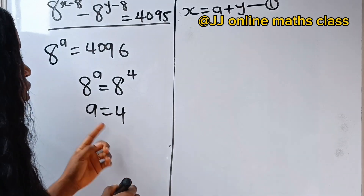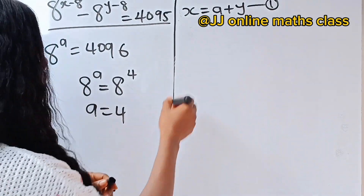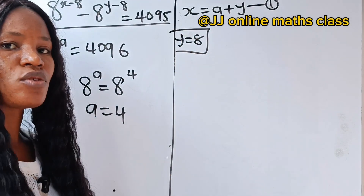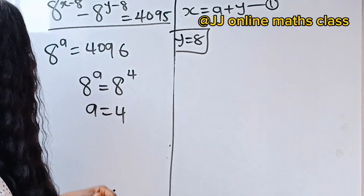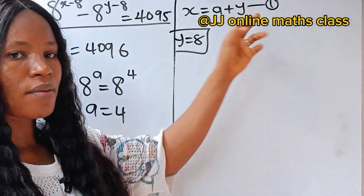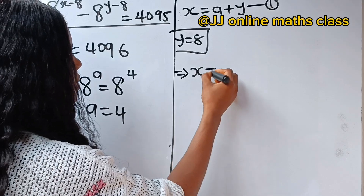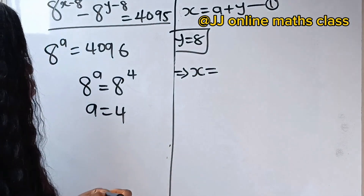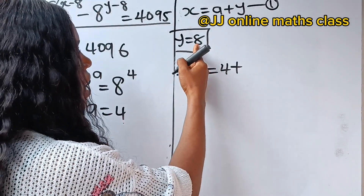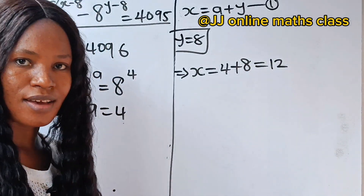We are not looking for a — we are looking for x. We have found y to be equal to 8. Now, recall that x equals a plus y. So our x is equal to a, which is 4, plus y, which is 8. That means our x is 12.